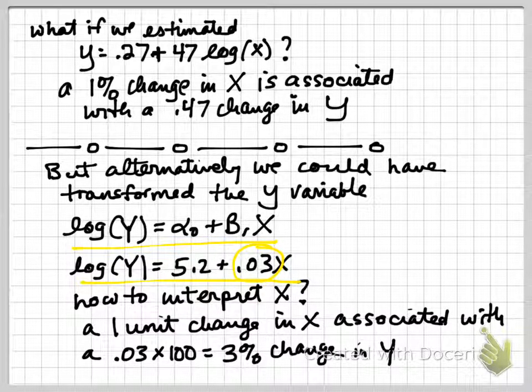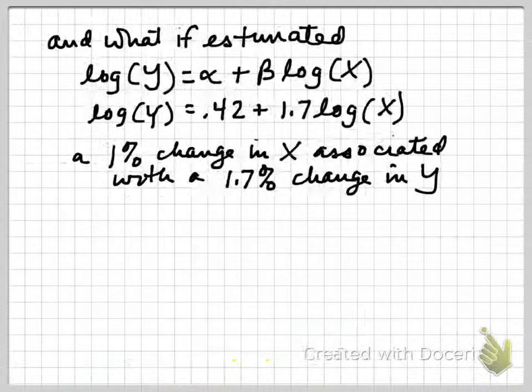Well, we'll say that a 1-unit change in x is associated with a 0.03 times 100, a 3% change in y. So when we have the log of y of the outcome variable, we interpret the coefficient on x as the number multiplied by 100 being the percent change in y that's caused by a 1-unit change in x.